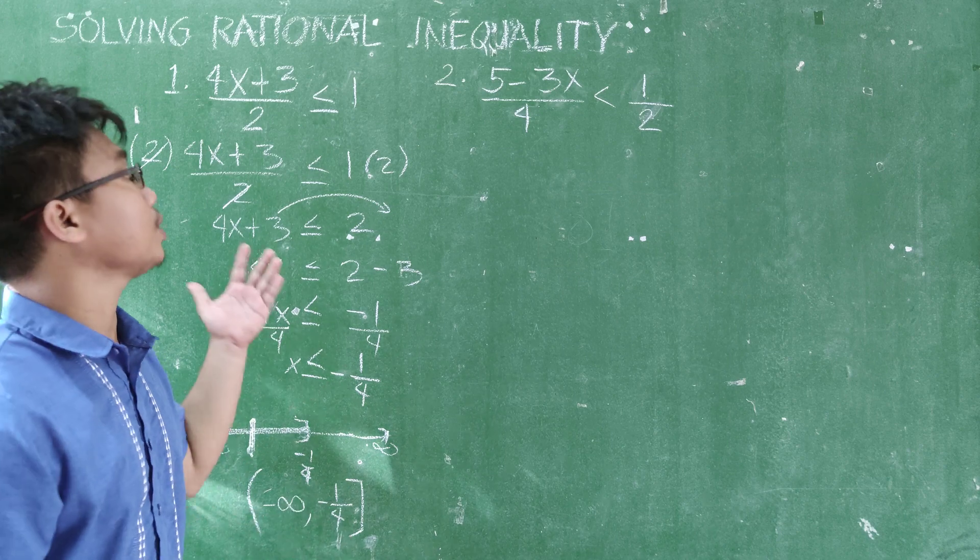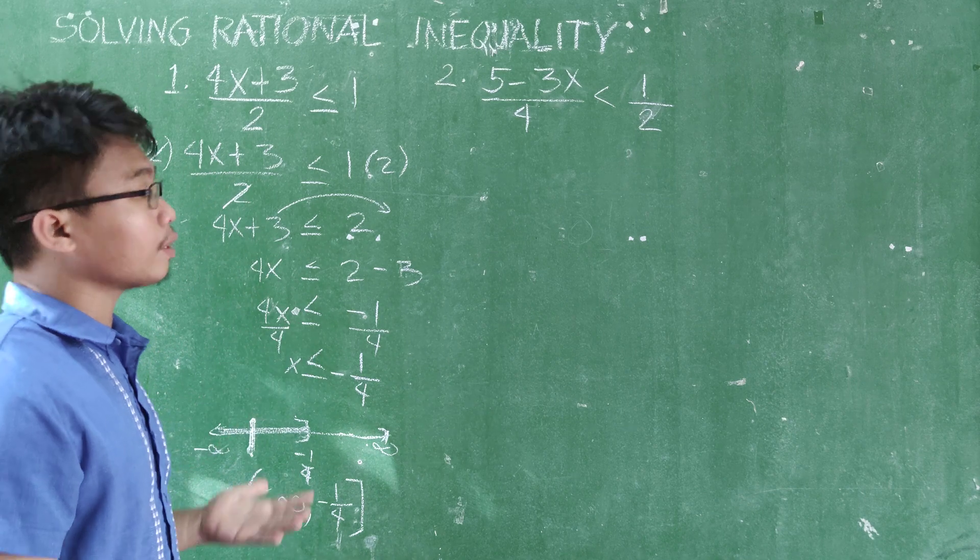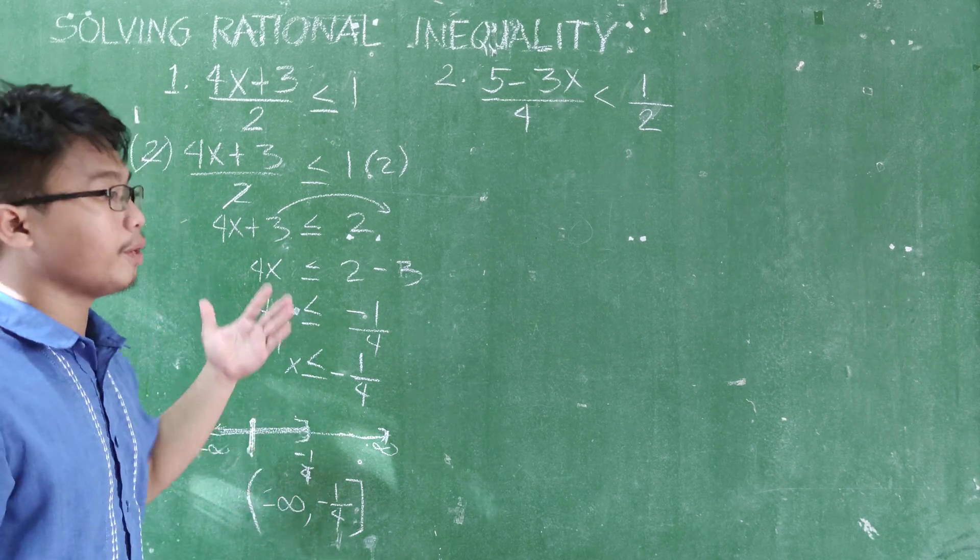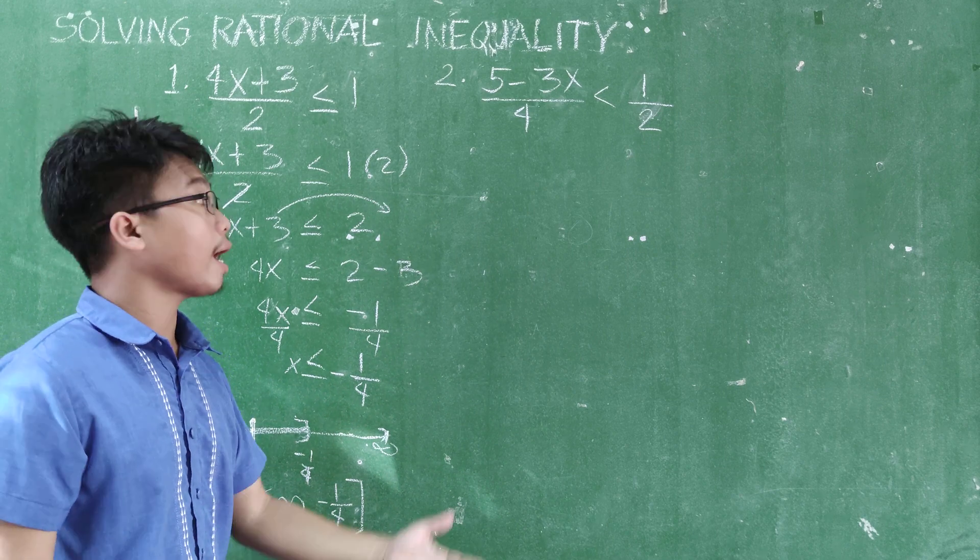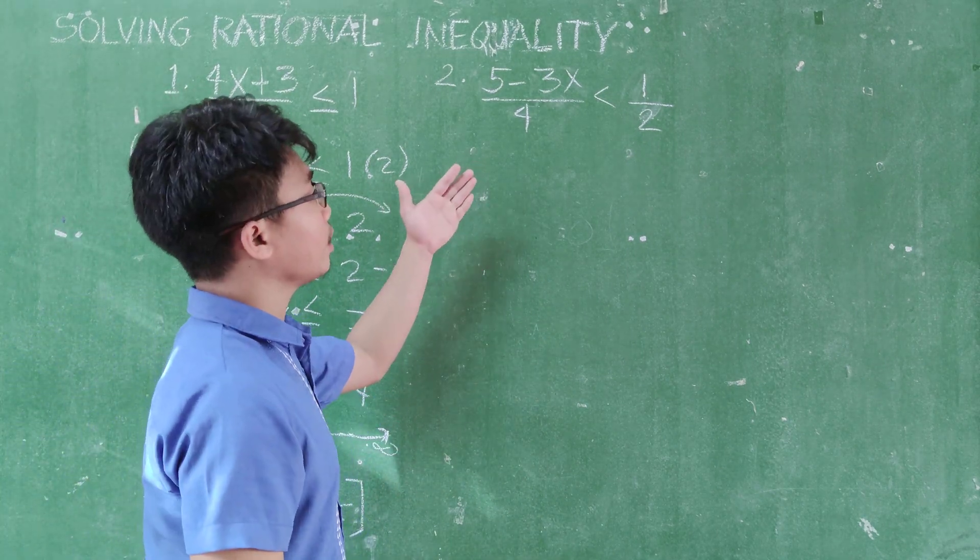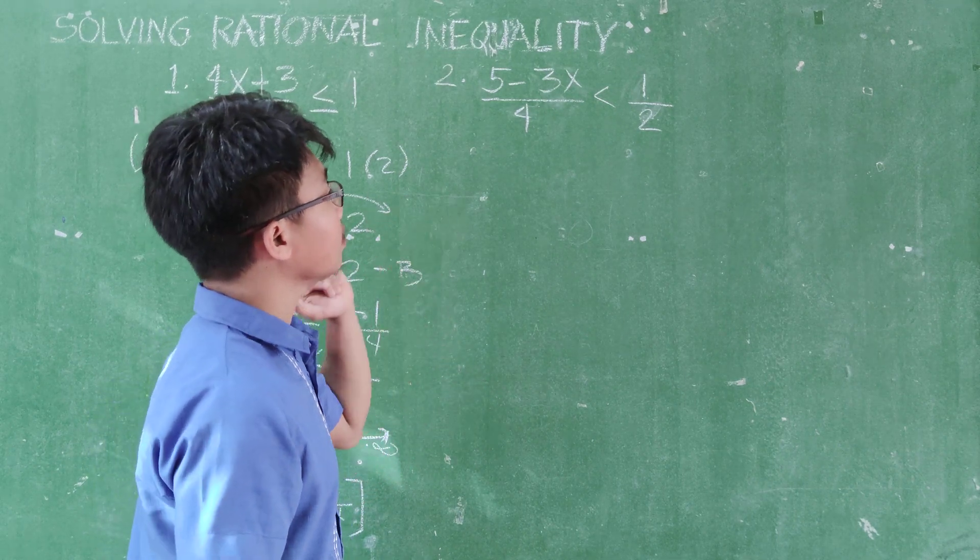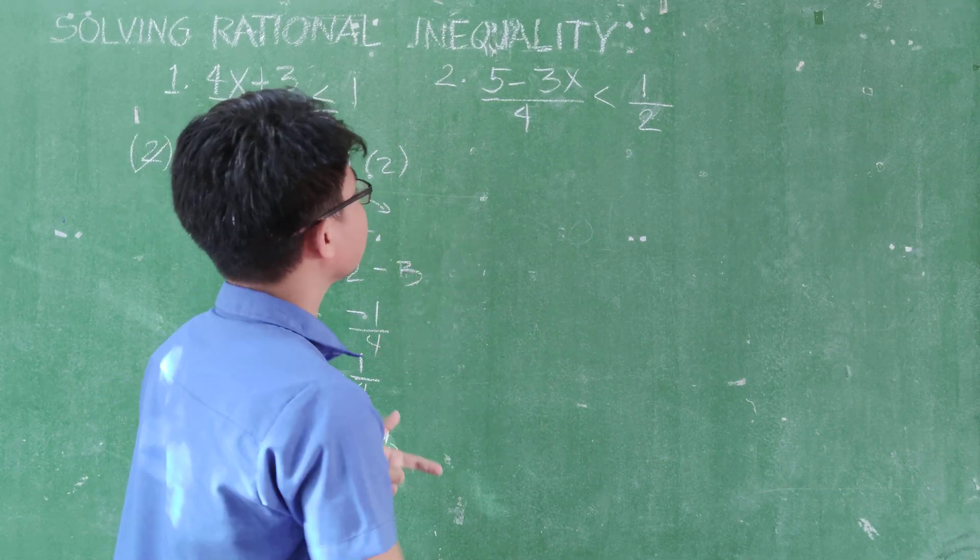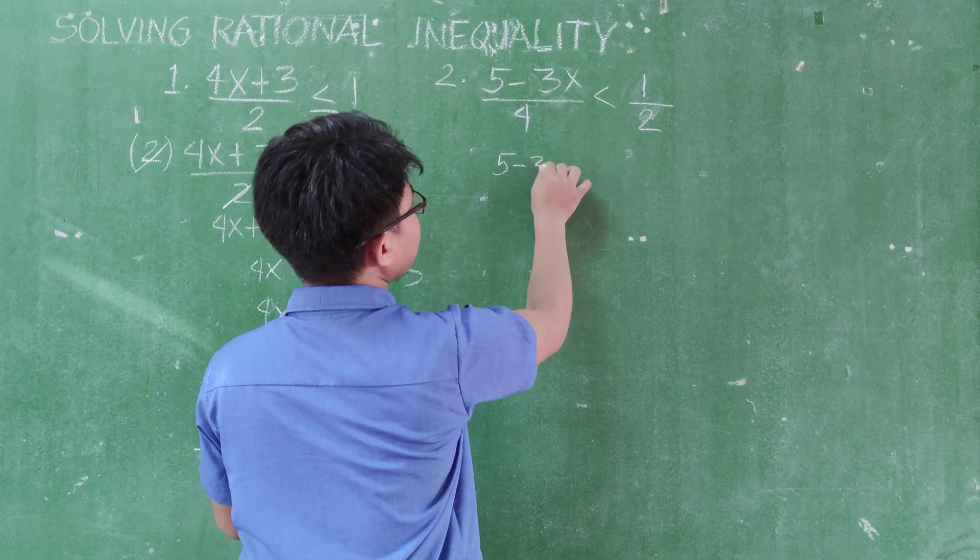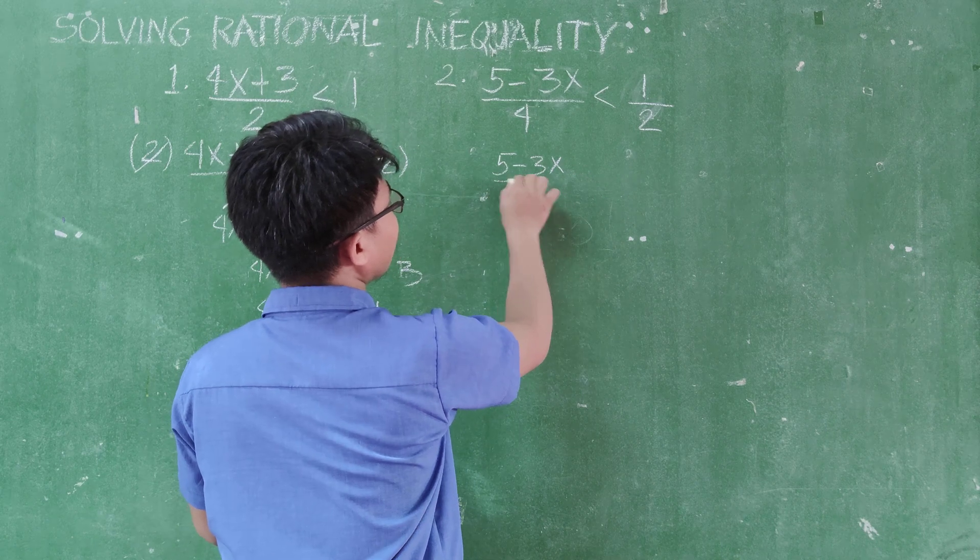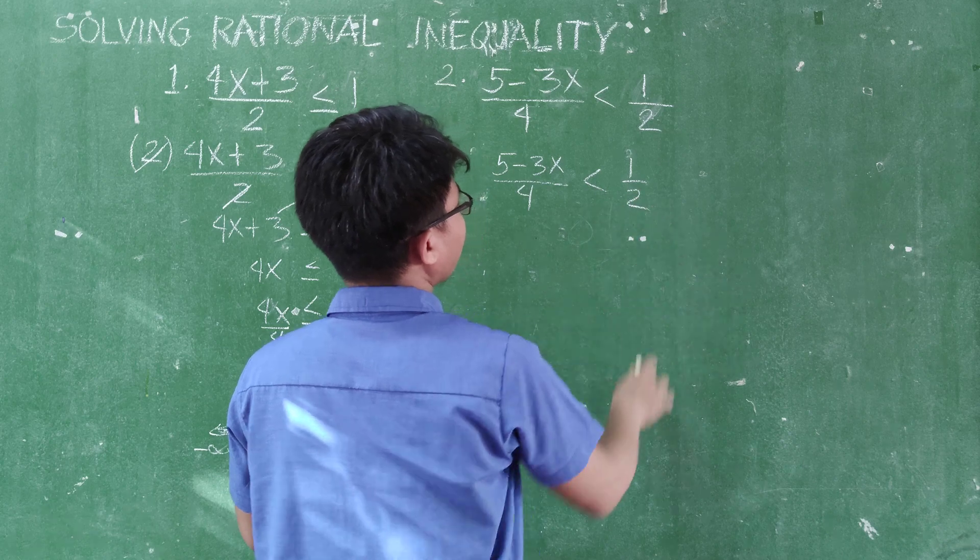Right? So I hope you understand how I do example number 1. So you can go back on this and review the steps. For example number 2, I have 5 minus 3x all over 4, less than 1/2. So again, get the LCD. So you write this: 5 minus 3x all over 4, less than 1/2.